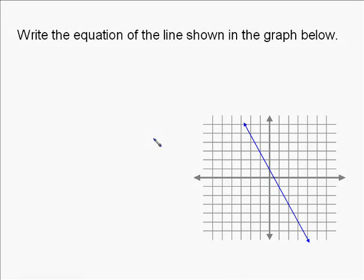The following problem asks us to write the equation of the line shown in the graph below. When we do this, we're going to use the formula y equals mx plus b, which is the standard form for a linear equation, or a straight line, where m is always our slope and b is always our y-intercept.